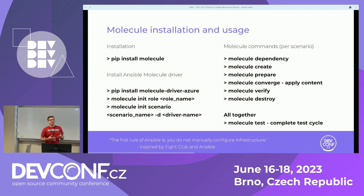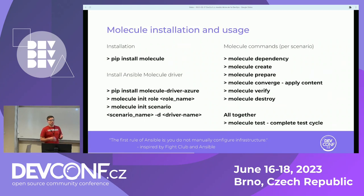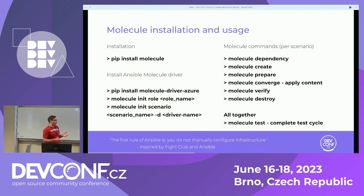First, the dependency step installs all dependencies needed for a particular scenario. Molecule operates with scenarios — you can have as many scenarios as you like. Then you create your infrastructure, provisioning it or ensuring all instances are started in the cloud. Then you prepare it: installing the systems, ensuring all systems are running. Then the main loop starts — the molecule converge command, which you can apply many times, and this is the core of your development and testing process. Then you verify and destroy. All steps can be executed with a single command: molecule test.